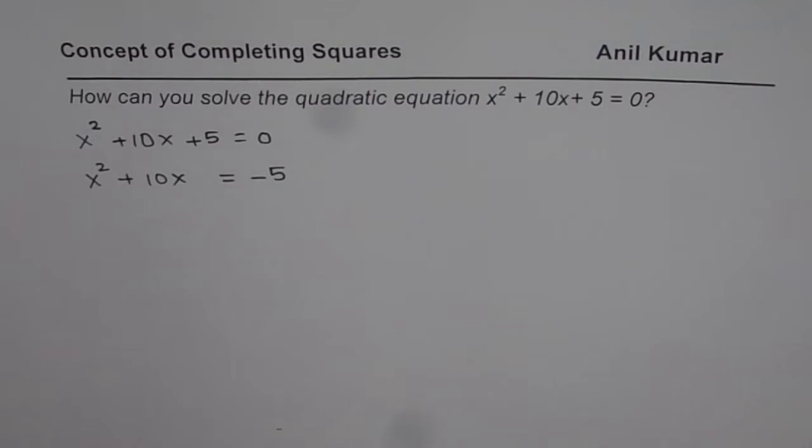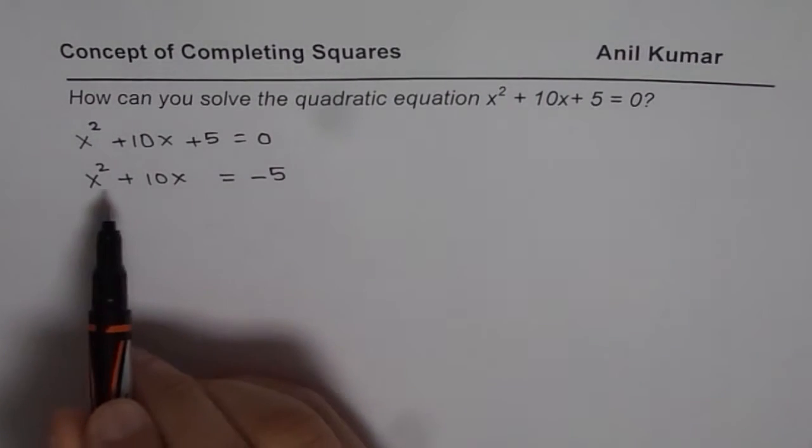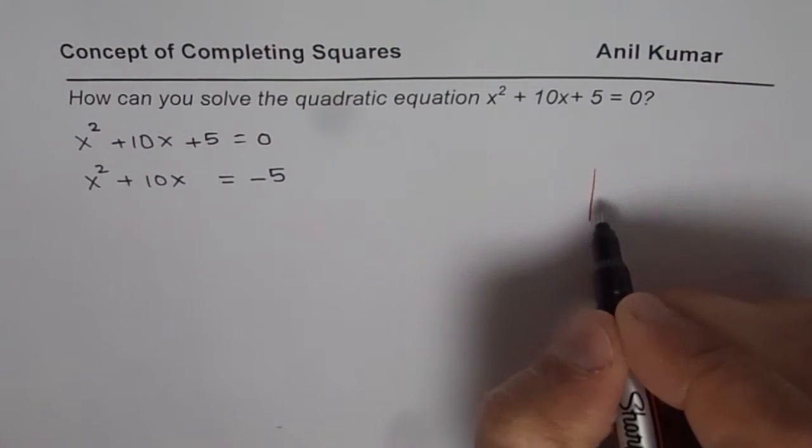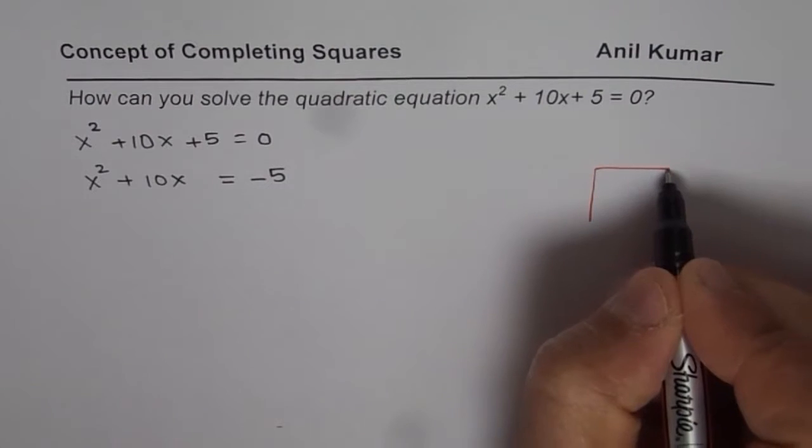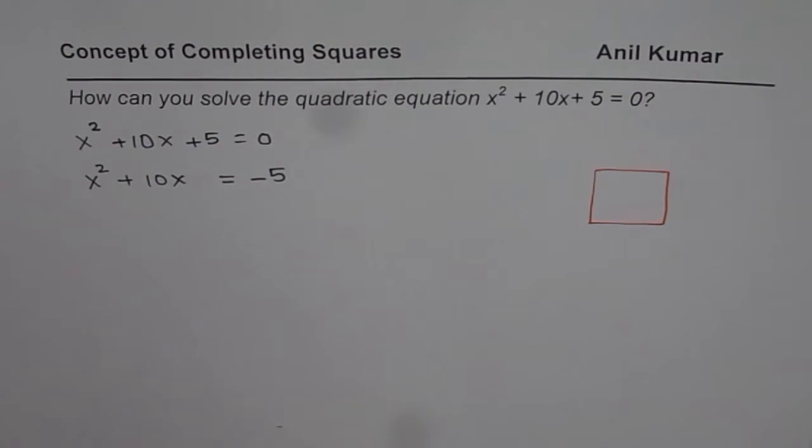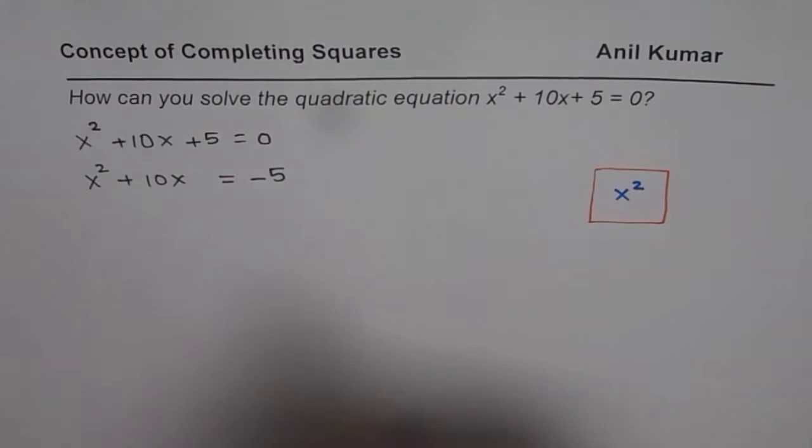Here is the insight which I learned and am sharing with you. When we say x² + 10x = -5, let me make a square which represents x². This is my square for the first term.